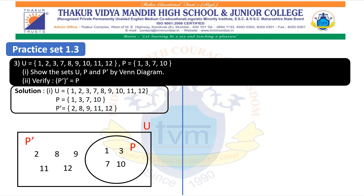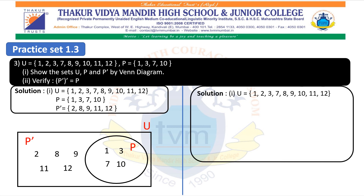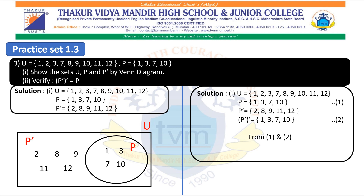Sub-question 2: Verify that P-complement complement equals P. P-complement contains the elements not in P but in U: {2, 8, 9, 11, 12}. P-complement complement contains the elements not in P-complement but in U: {1, 3, 7, 10}. Set P and P-complement complement contain the same elements. Therefore, from 1 and 2, it can be said that P-complement complement equals P.